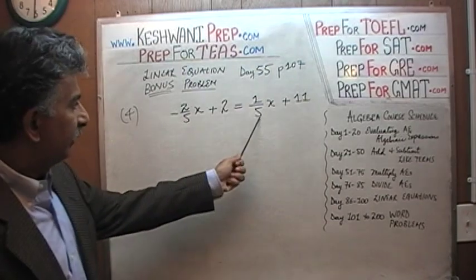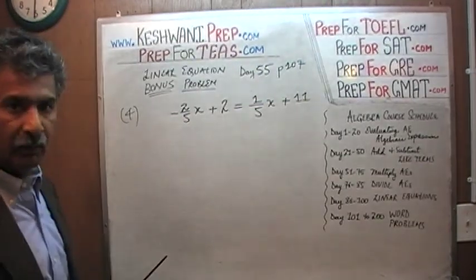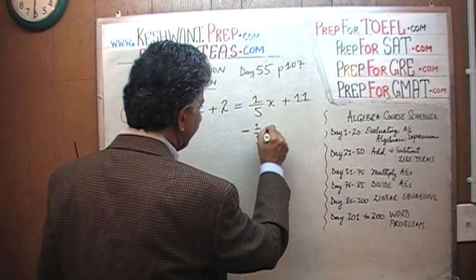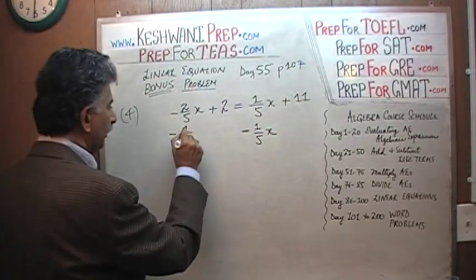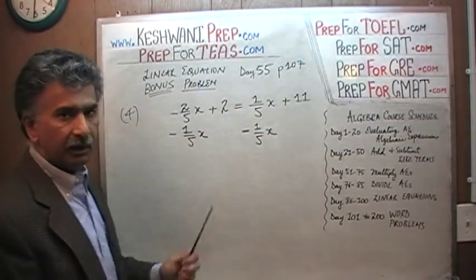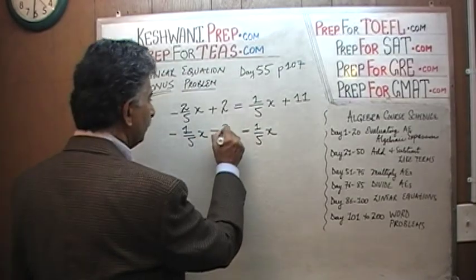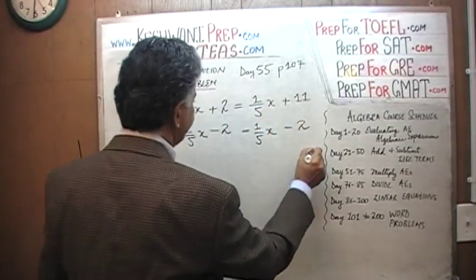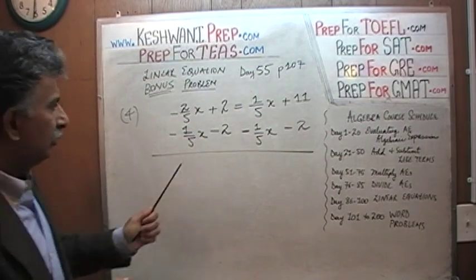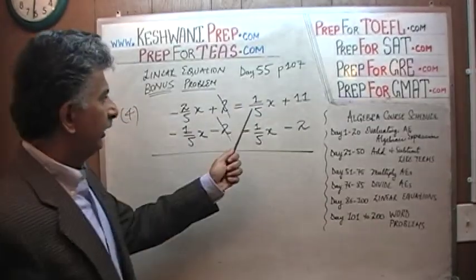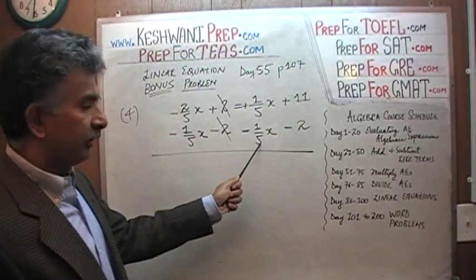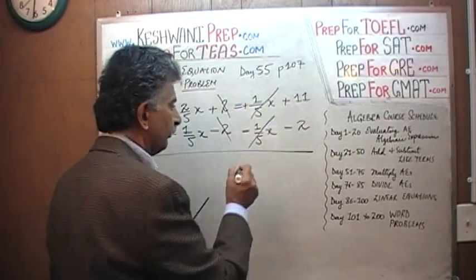So what do we do here? We do exactly what we said. We need to bring this 1 over 5x over this side. How do we do it? By subtracting 1 over 5x from both sides. We need to bring the 2 to that side. How do we do that? By subtracting 2 from both sides. Voila. So now when we add the two quantities here, the positive 2 and negative 2, they will cancel each other out. And similarly here, we have a positive 1 over 5x and a negative 1 over 5x. They will kill each other. That was the whole point.